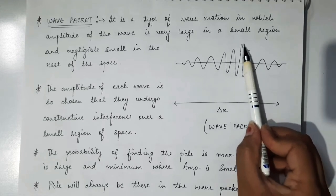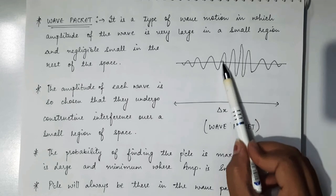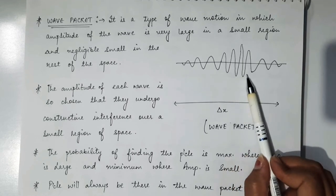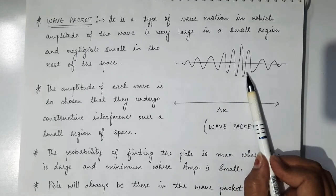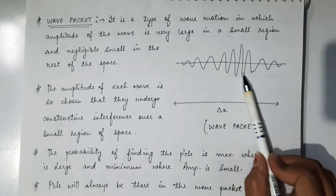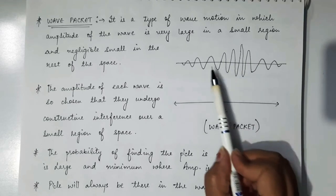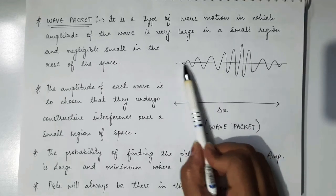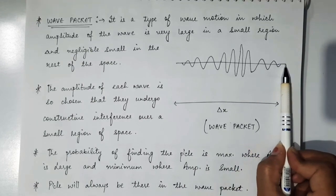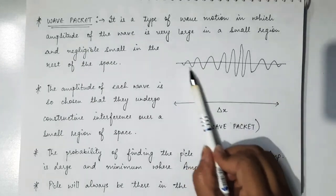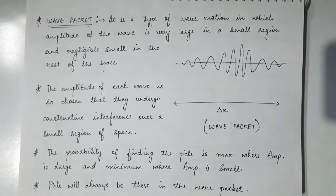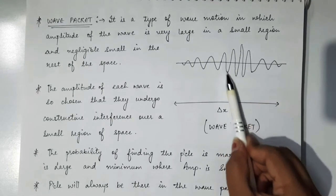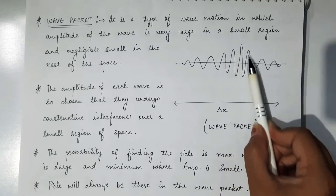Where the amplitude of the wave is large, the probability of finding the particle is maximum. And the probability of finding the particle is minimum where the amplitude of the wave packet is small. So the probability of finding the particle is highest where the amplitude is large.